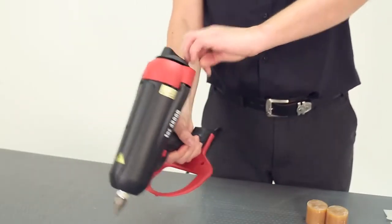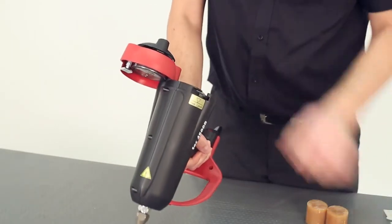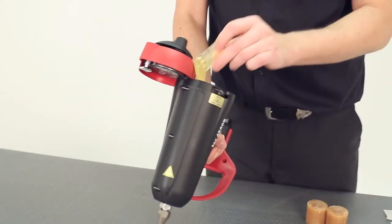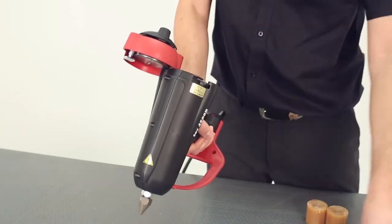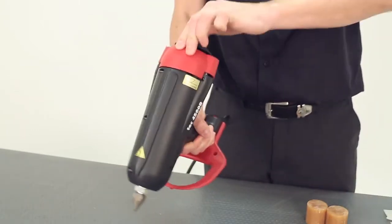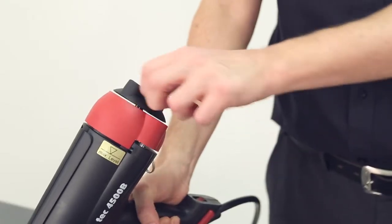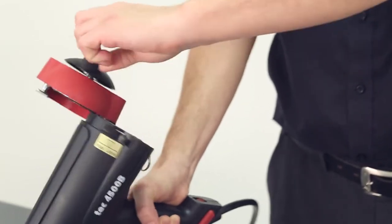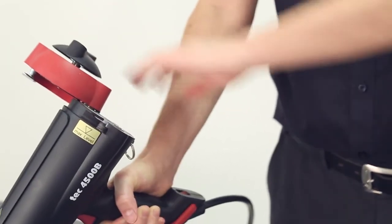To get started, simply load your glue into the melt chamber and seal it using the one-handed twist-action lock. As well as allowing for quick and easy loading of the glue tank, the soft closing mechanism also ensures efficient energy consumption and the highest possible melt rate.